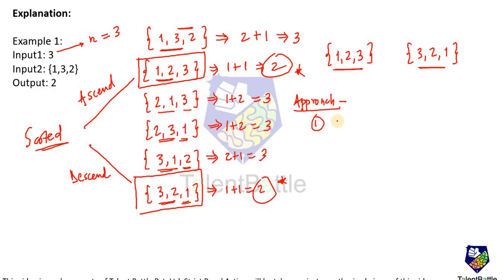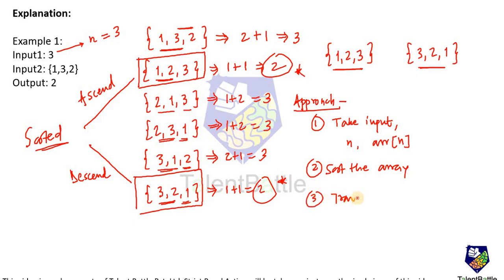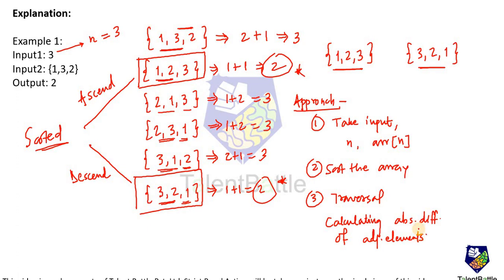The step-by-step approach is: first, take inputs — n and the array of size n. Second, sort the array. Third, perform traversal using a for loop and calculate the sum of absolute differences of adjacent elements. Finally, display the sum as the final output. This is what I was talking about — once you analyze the question properly, you develop a clear step-by-step approach, and then you can easily convert it into code.